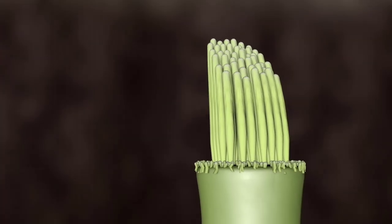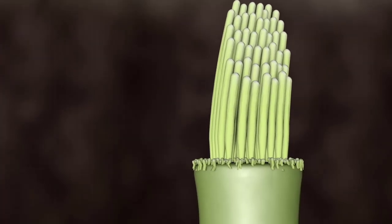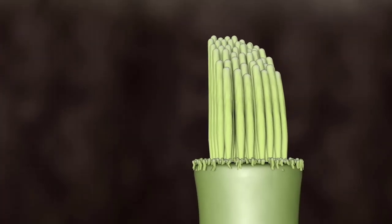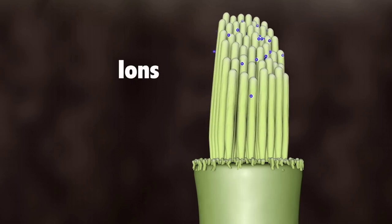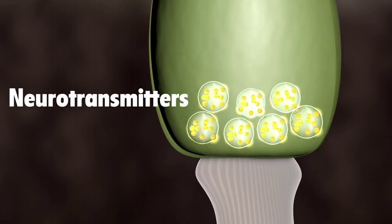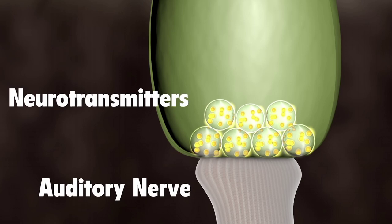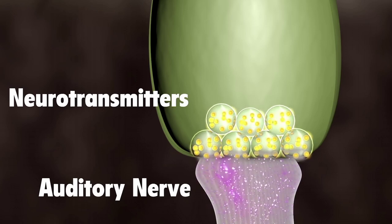The hair bundle on top of the hair cell turns these movements into electrical signals. As the hair bundles are moved, ions rush into the top of the hair cells, causing the release of chemicals at the bottom of the hair cells. The chemicals bind to the auditory nerve cells and create an electrical signal.